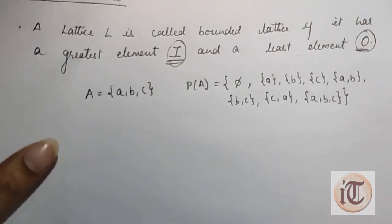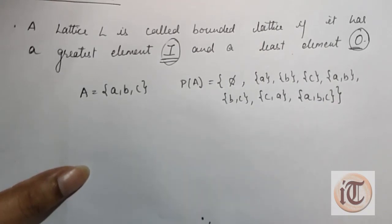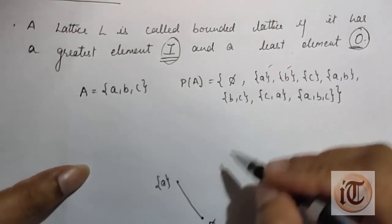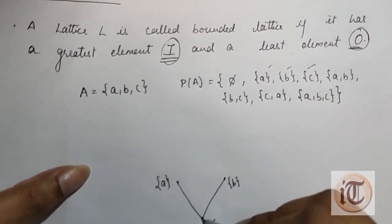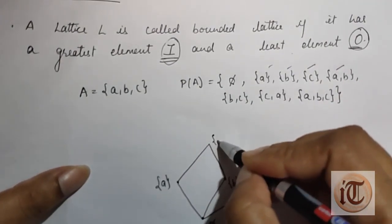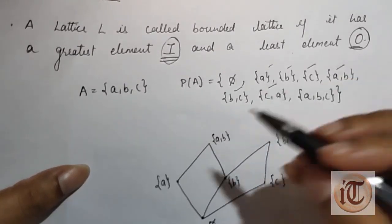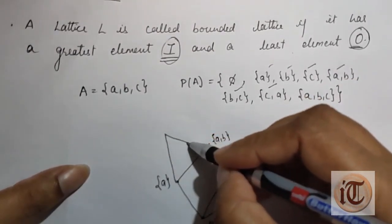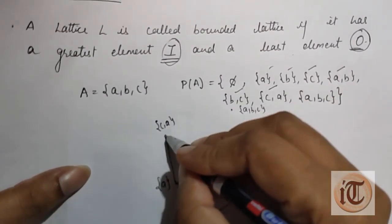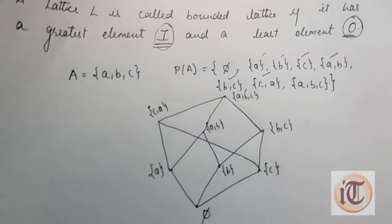Now first we have to draw the Hasse diagram for this power set. Phi is the null set, so it is represented as the least element at the bottom. Next are {a}, {b}, and {c}. Then {a,b}, {b,c}, and {c,a}. Finally {a,b,c} is connected at the top. This is the Hasse diagram for the power set of set A with elements a, b, c.